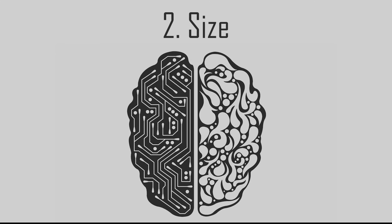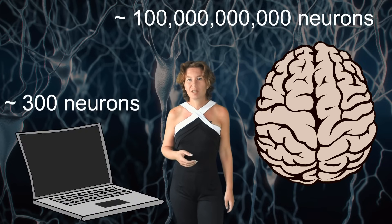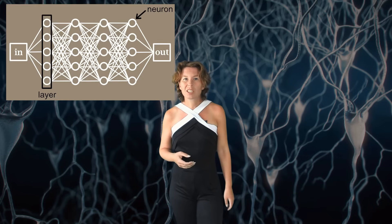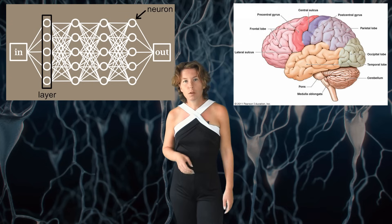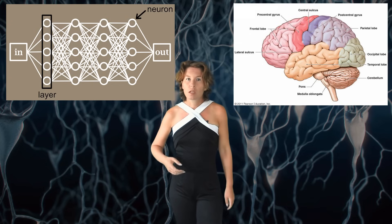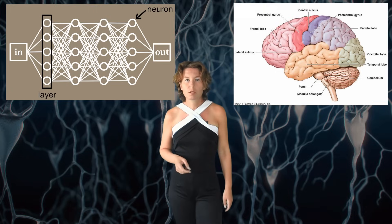Second, size. The human brain has about 100 billion neurons. Current neural nets typically have a few hundred or so. Third, connectivity. In the neural net, each layer is usually fully connected to the previous and the next layer. But the brain doesn't really have layers — it instead relies on a lot of predefined structure. Not all regions of the human brain are equally connected, and the regions are specialized for certain purposes.